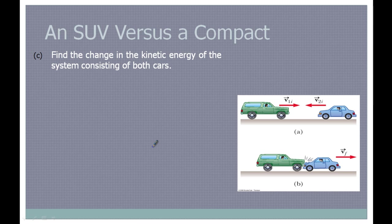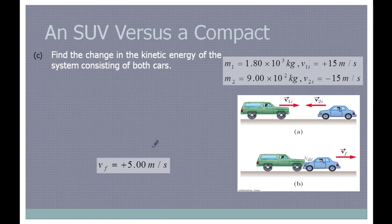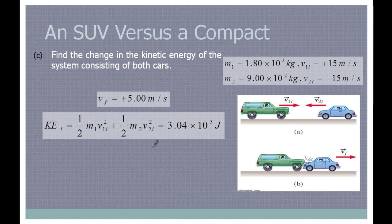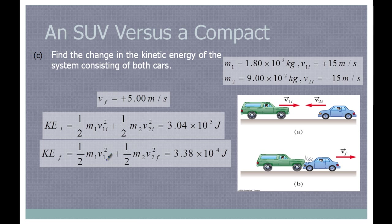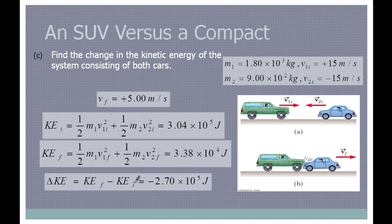Now we find the change in kinetic energy of the system. For the initial kinetic energy, we plug in the mass of the first car and its initial velocity plus the mass of the second car and its initial velocity — we get 3.04 × 10⁵ joules. For the final kinetic energy, both cars have the same final velocity of 5 m/s, giving 3.38 × 10⁴ joules. Subtracting final minus initial gives negative 2.7 × 10⁵ joules — the change in kinetic energy is definitely not zero, showing a big loss of energy.